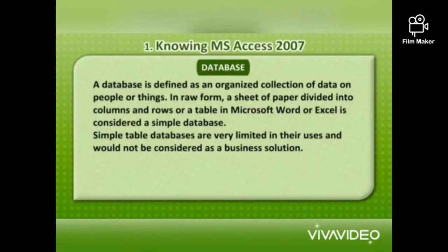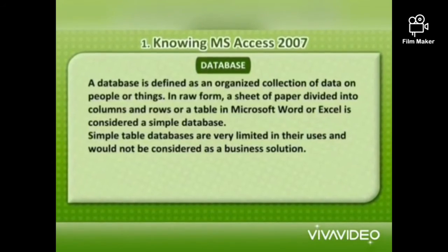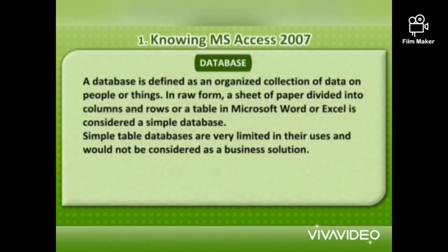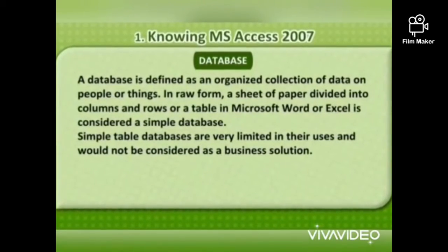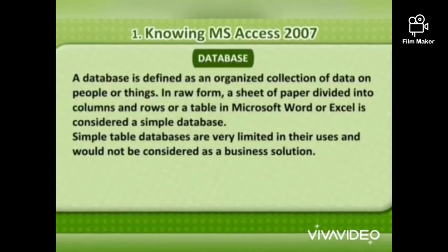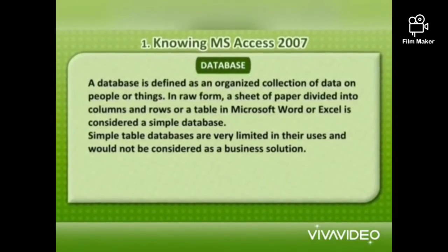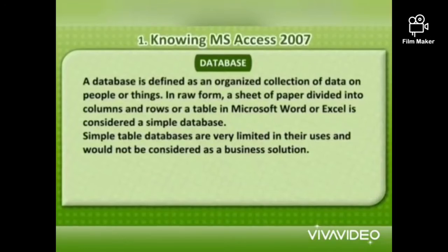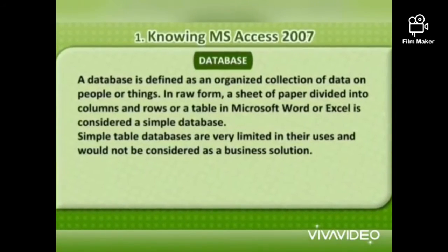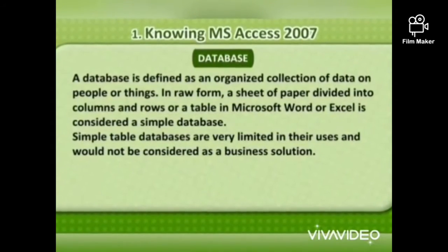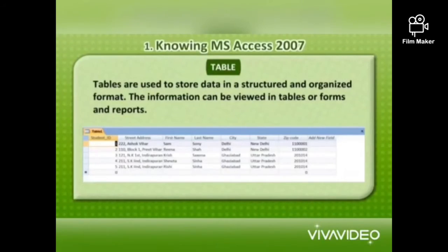What is meant by database? A database is defined as an organized collection of data on people or things. In raw form, a sheet of paper divided into columns and rows, or a table in Microsoft Word or Excel, is considered to be a simple database. Simple databases are very limited in their uses and would not be considered as a business solution.